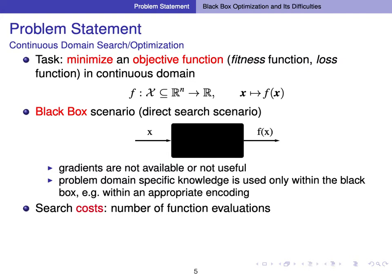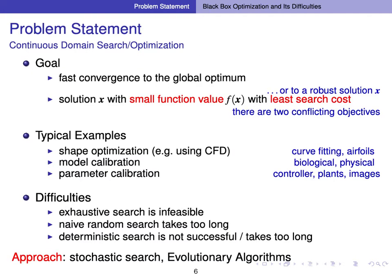Domain-specific knowledge is only used within the black box. For example, we can have a particular encoding of the problem which we put into the black box to make the function easier to optimize. We also assume that the search costs are the number of function evaluations in general. The general goal is to converge fast to the global optimum, or to find a solution x with a small function value with the least amount of function evaluations. Typical examples are shape optimization, model calibration, or parameter calibration.